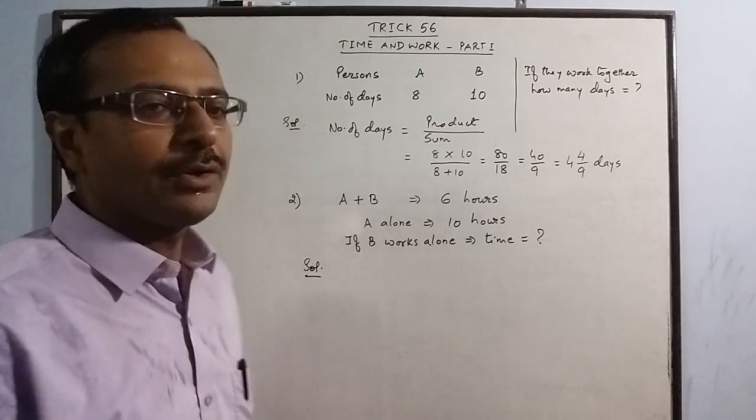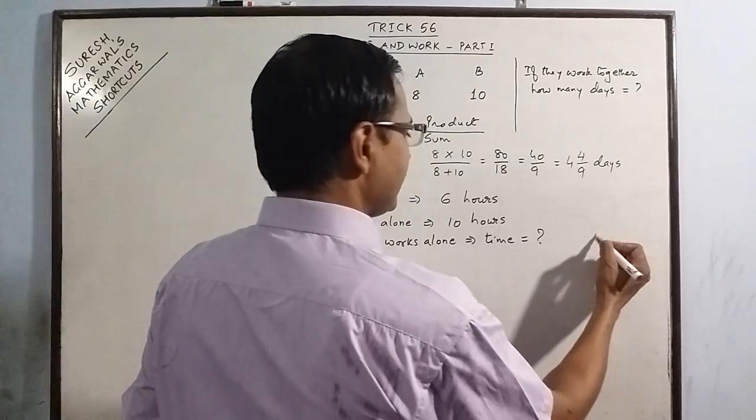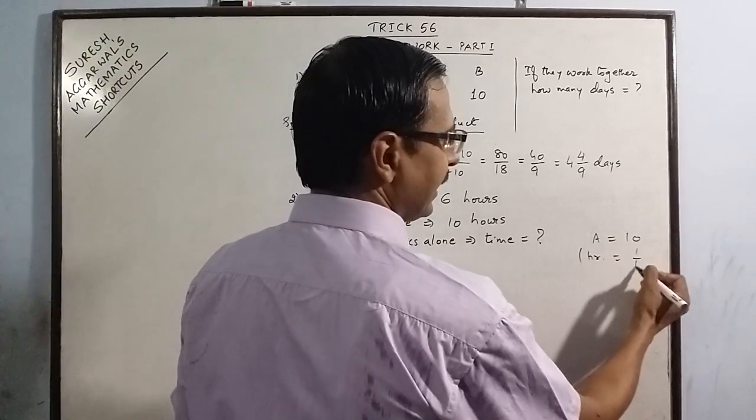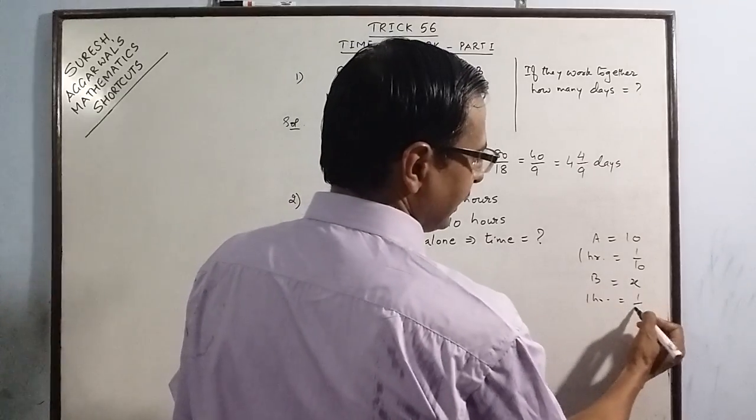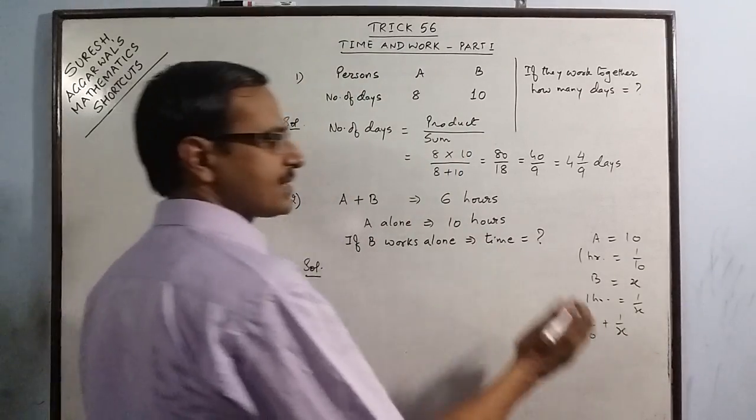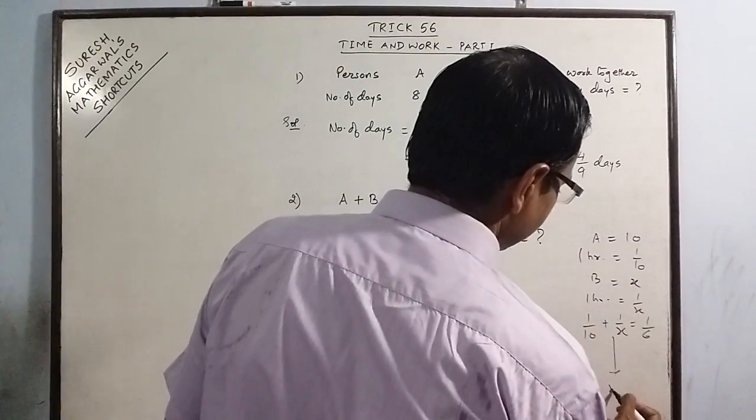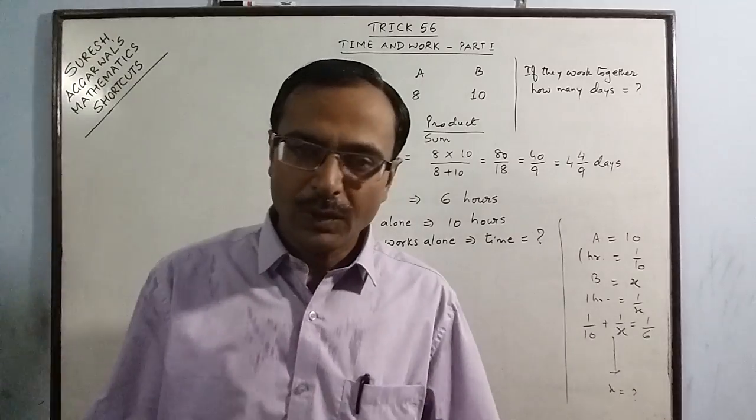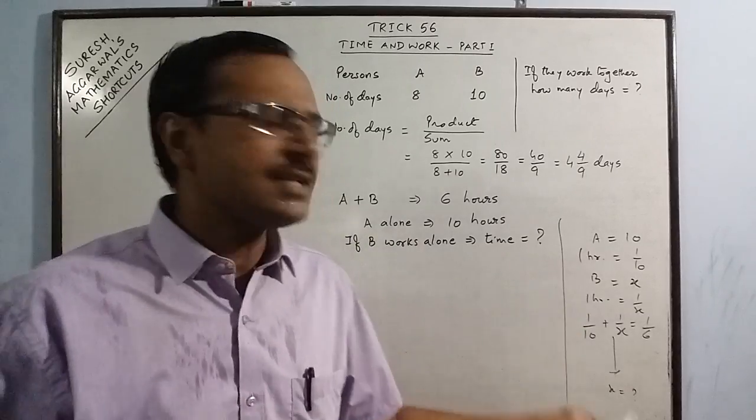Now for this also, people will use the traditional method. Here also, the rule of flip - if A is working alone for 10 hours, then 1 hour work is 1 by 10. If B is taking x hours, then 1 hour work is 1 by x. Then if they are working together, then 1 by 10 plus 1 by x, they are doing the work in 6 hours. So again rule of the reciprocal rule 1 by 6, then they have to solve this and find the answer. This is the traditional method through which if you solve this and you are really good in calculations, you will take say 30 seconds to solve this.